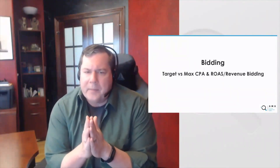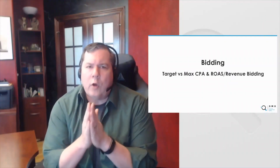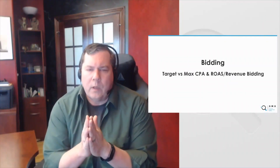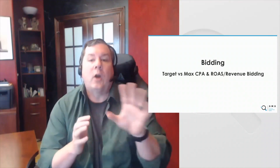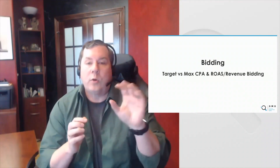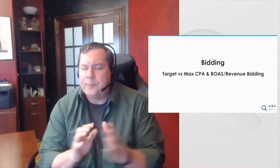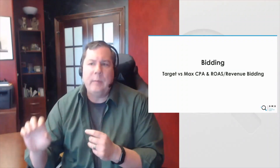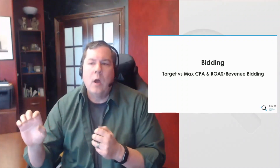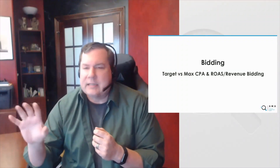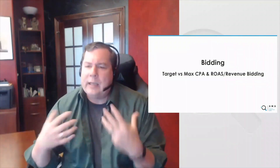We're going to get deep into bidding and do a bit of math. There are two overall concepts of bidding at Google. We have target — this could be target ROAS or target CPA. Conceptually, we're going to call this 'target' because it works the same for either CPA or ROAS. And then we have max — it could be max revenue or max conversions. The concepts are the same.